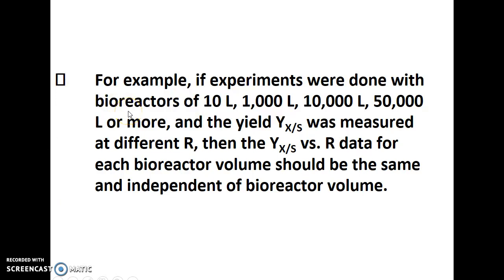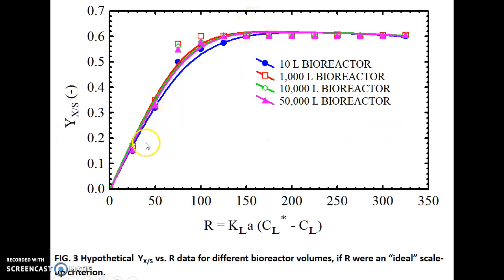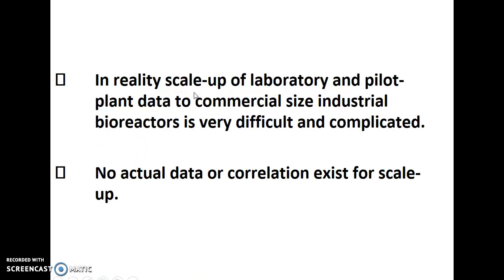For example, if we perform experiments for various bioreactor sizes — 10 litres, 1,000 litres, 10,000 litres, 50,000 litres, and so on — and plot a graph between yield and R, if R were a true scale-up criterion, we would get a similar pattern to what we obtained for the 10-litre bioreactor. The graph shows that for almost all bioreactor sizes, yield increases with R up to a certain point and then becomes constant, confirming the selected criterion as a true scale-up criterion.